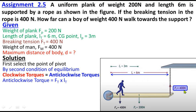The counter-clockwise torque is produced by the tension: Ft = 400 newton and distance = 6 meter, so 400 multiplied by 6 meter equals 2400 newton meter.